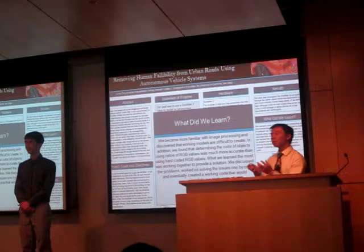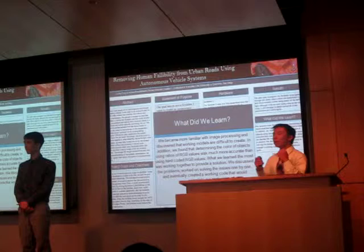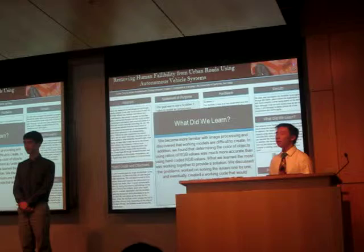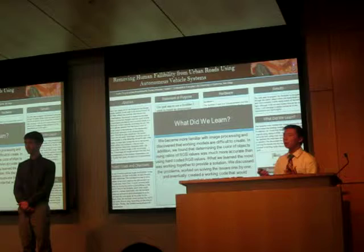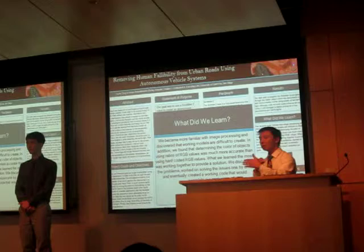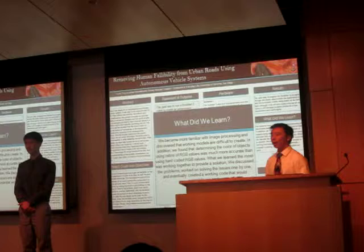The problem with our original code was that we started with hard-coded RGB values, and that proved very difficult because the camera had an auto-brightness feature that could either brighten or darken the picture based on the environment. Instead, we used ratios of RGB values — how red relates to green to blue — and that proved more accurate than using hard-coded values.